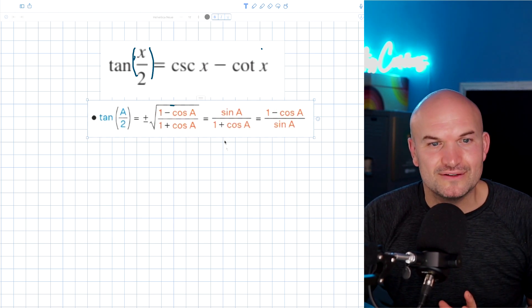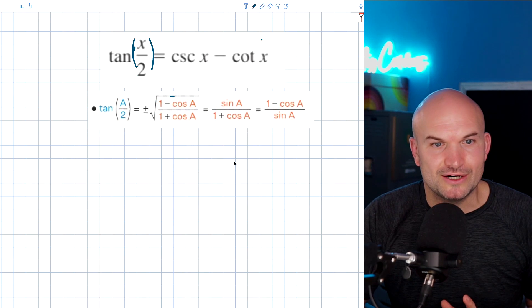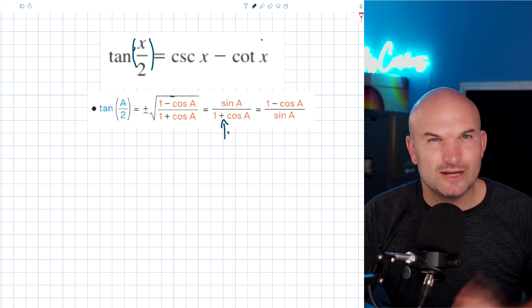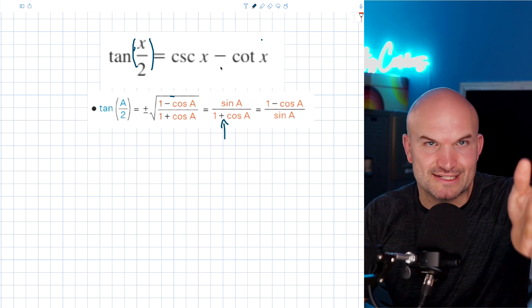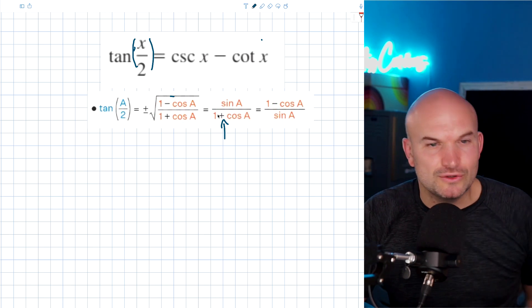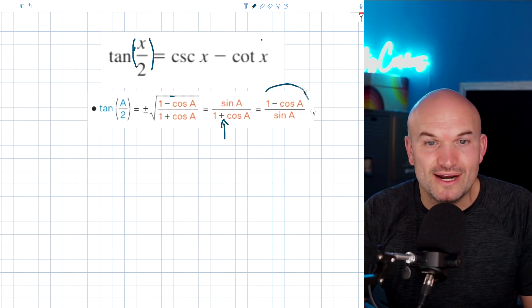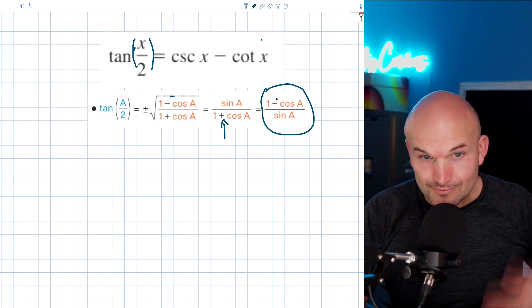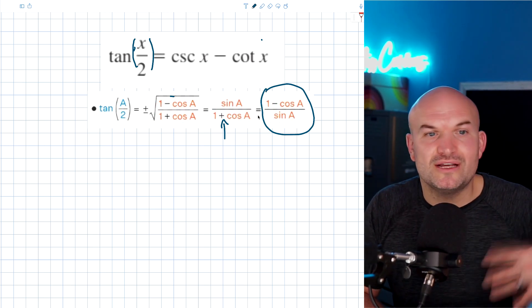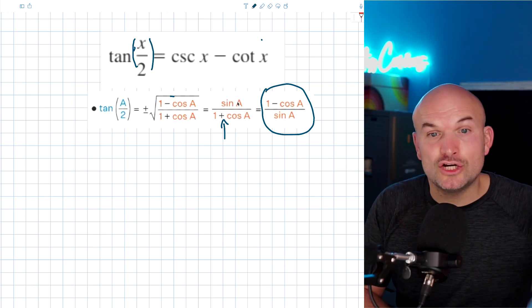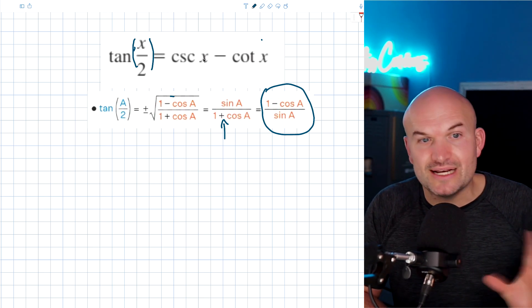And the same kind of thought process can be applied here to this one. Like, why do you want a plus if on the right hand side has a subtraction? Why do you want to include an identity with a plus? You don't. So the one identity you're going to want to use is the one that you feel can be most easily converted or rewritten on the right hand side.